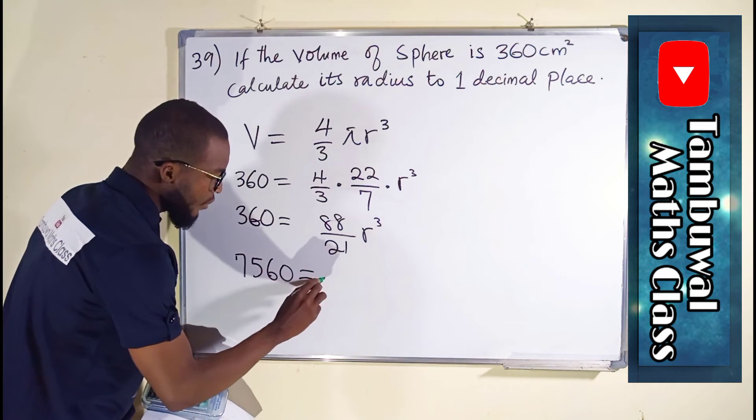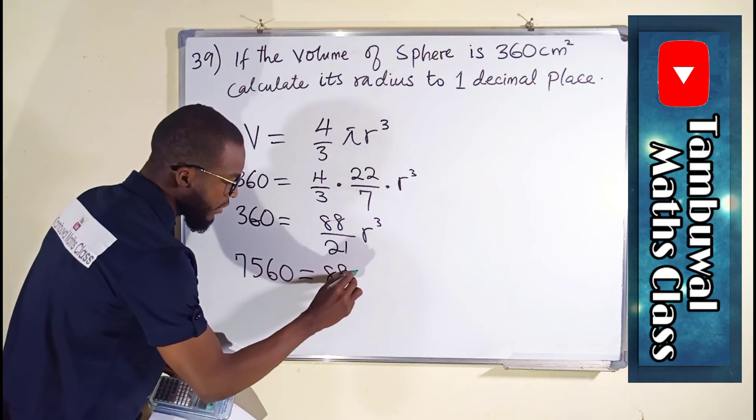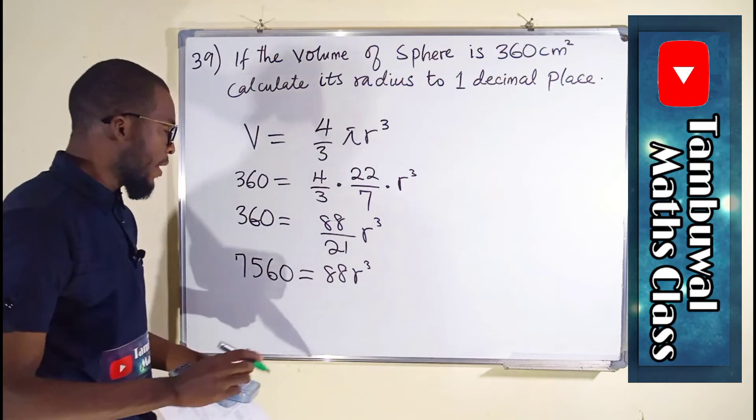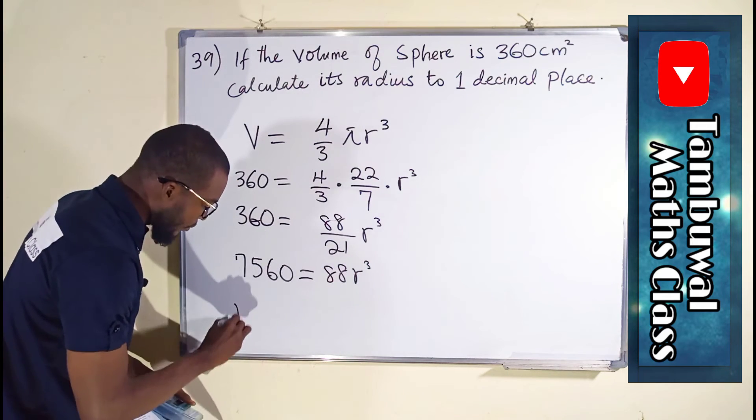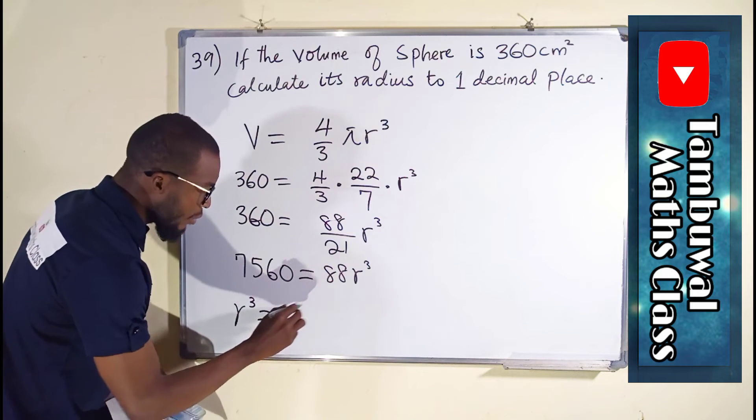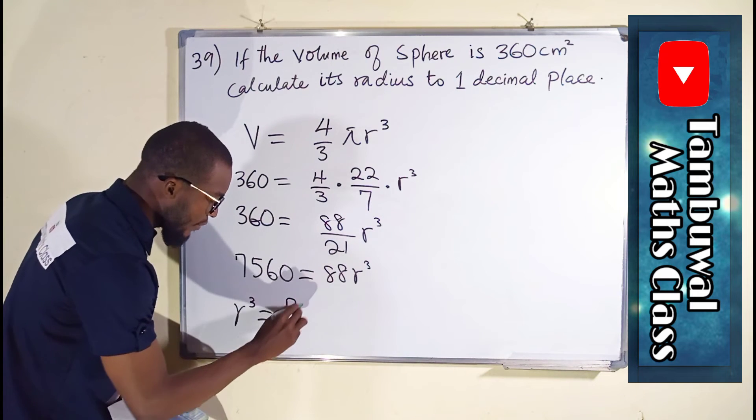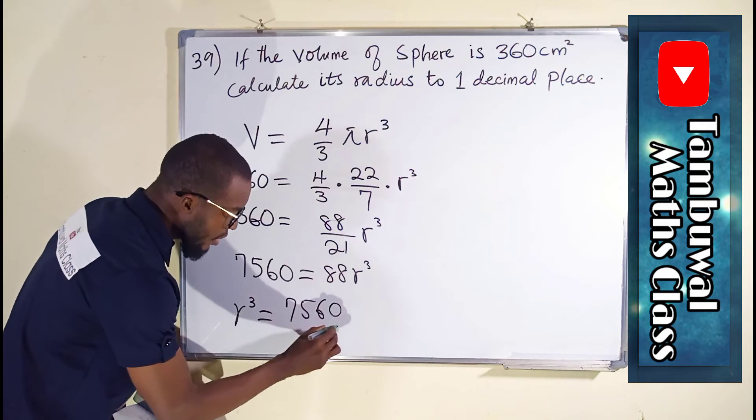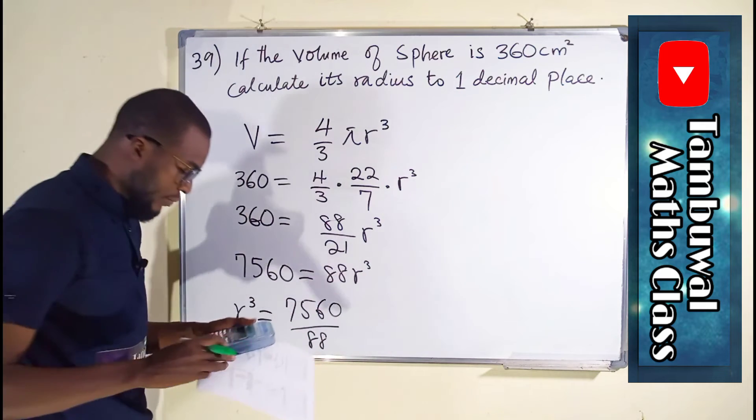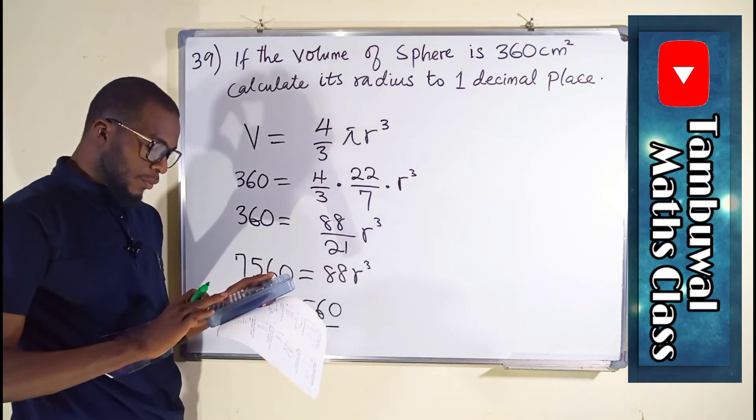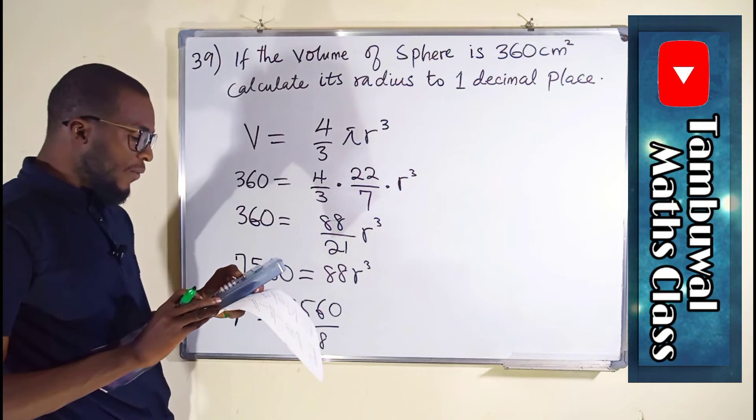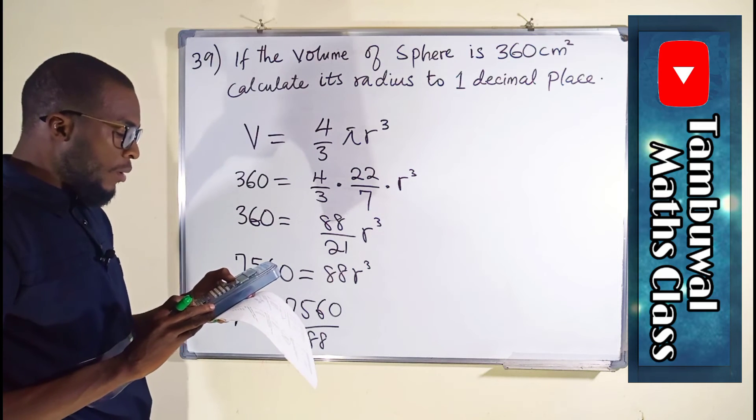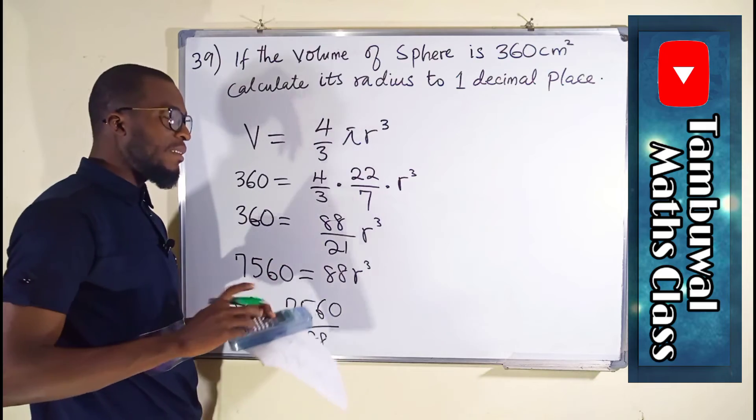On the right we have 88r³. To find r³, we divide both sides by 88, so 7,560 ÷ 88 = 85.9090 approximately.